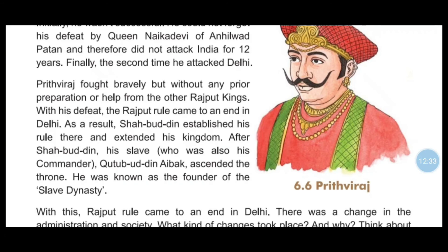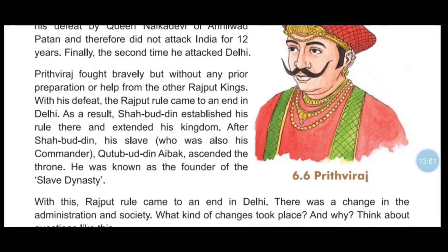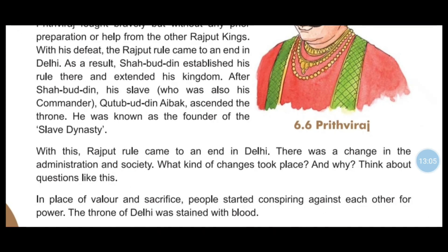After Shahabuddin, his slave who was also his commander — Qutbuddin Aibak — took power. He was known as the founder of the Slave Dynasty. With this, the Rajput rule came to an end in Delhi, and there was a significant change in the administration and society.